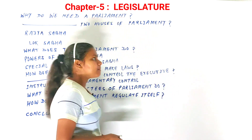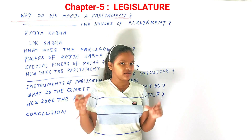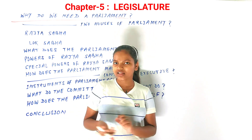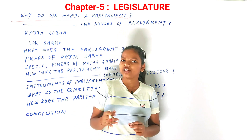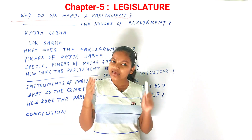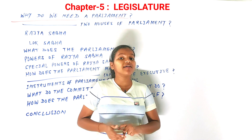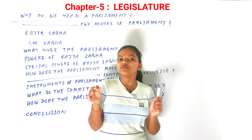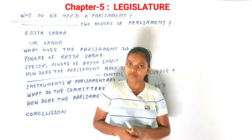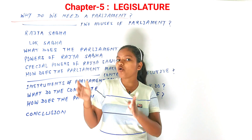Let's get started with the first topic: why do we need a parliament? Parliament is the national legislature of a country. In a democracy, people are the final authority but they can't make laws for themselves because there are so many of them and they lack the required skills. That is why they choose representatives through elections, and those representatives are in parliament. The parliament becomes very important because it is the chief lawmaking body of a country and the body of representatives of the people.